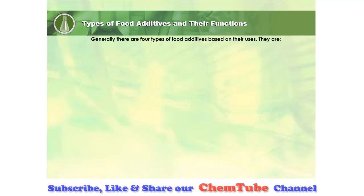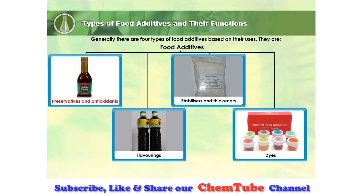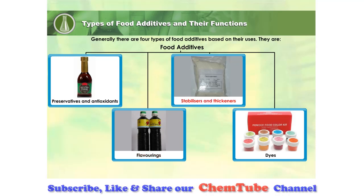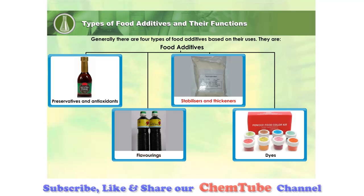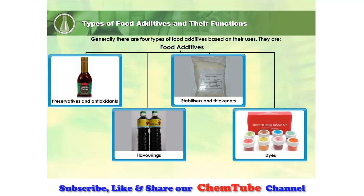Generally, there are four types of food additives based on their uses. They are: Preservatives and antioxidants, Flavorings, Stabilizers and thickeners, and Food dyes.